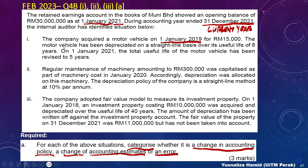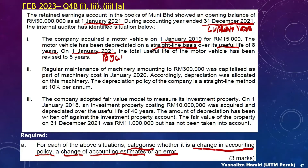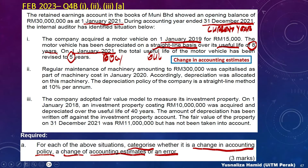In scenario 1, the motor vehicle has been depreciated on a straight-line basis starting from 1st January 2019 over a useful life of 8 years. On 1st January 2021, which is the beginning of the current year, the total estimated useful life was revised to 5 years. The revision of estimated useful life is a change in accounting estimates.